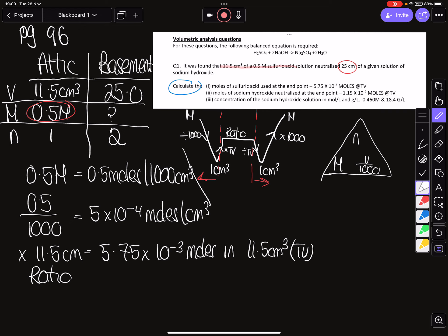So the ratio in this case that we're interested in is 1 is to 2. So we know that 5.75 by 10 to the minus 3 moles, that is going to be worth one equivalent, so then we multiply it by 2 and I end up with 1.15 by 10 to the minus 2 moles and that is now going to be in my 25 centimeters cubed.